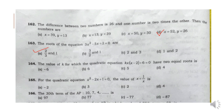Question 164: The value of K for which the quadratic equation KX(X minus 2) plus 6 is equal to 0 has two equal roots is Option B: 6.